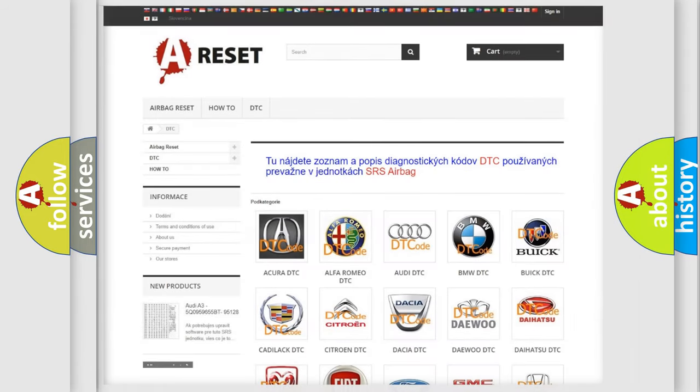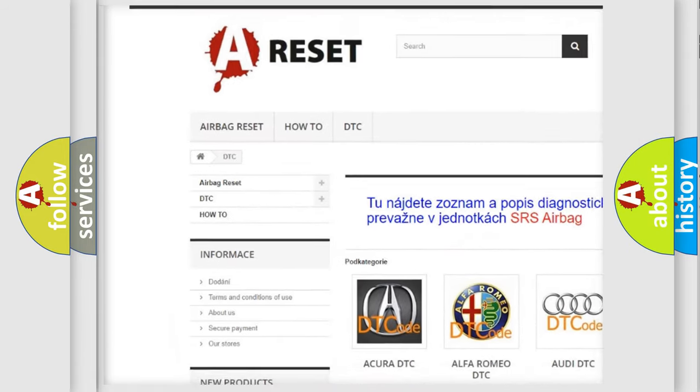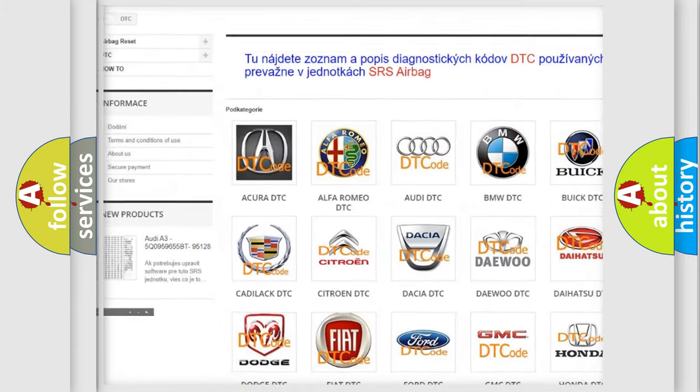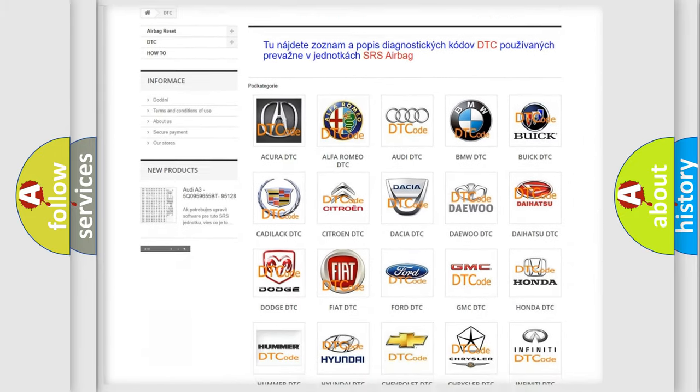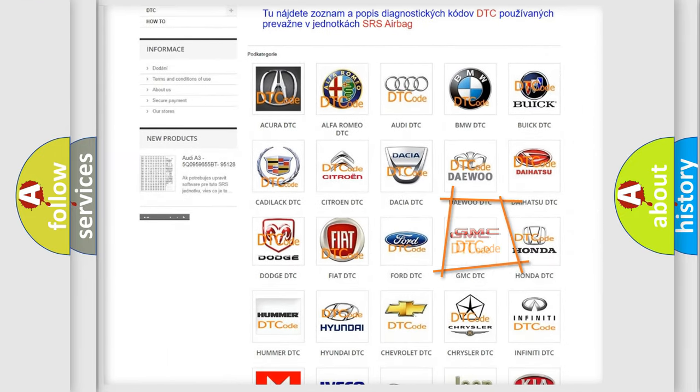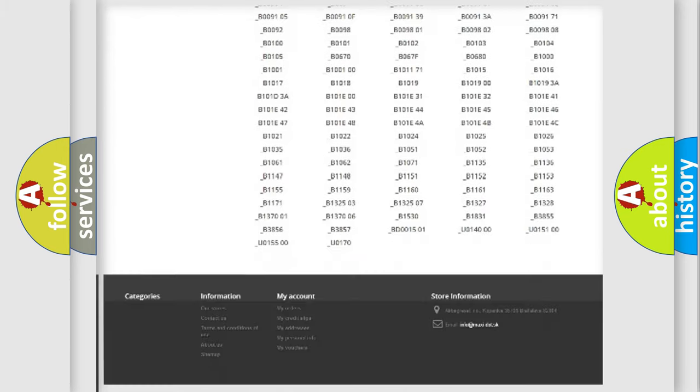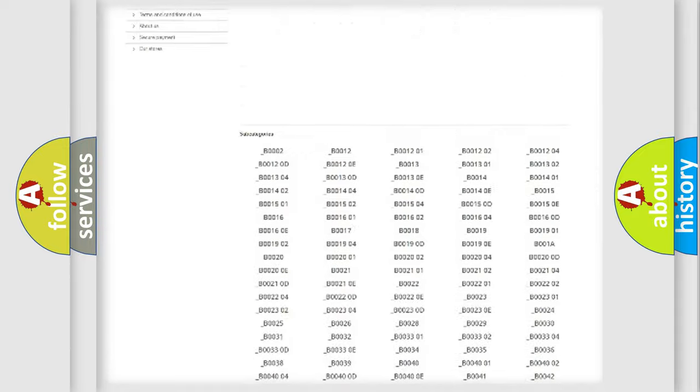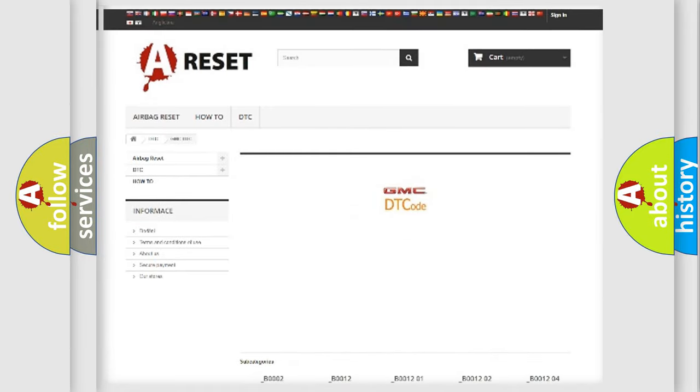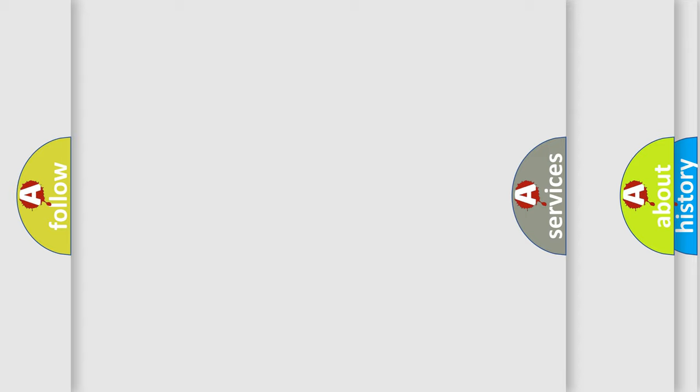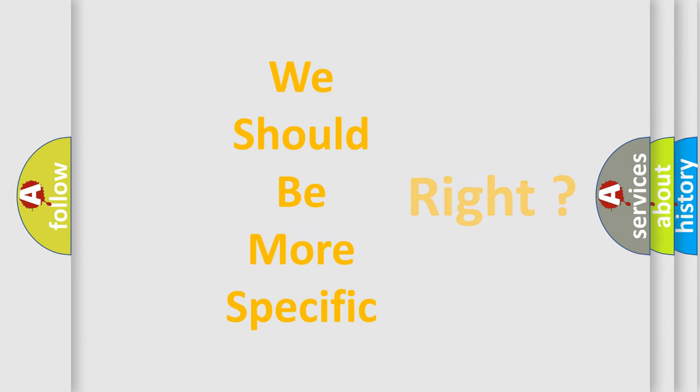Our website airbagreset.sk produces useful videos for you. You do not have to go through the OBD2 protocol anymore to know how to troubleshoot any car breakdown. You will find all the diagnostic codes that can be diagnosed in GMC vehicles, and also many other useful things. The following demonstration will help you look into the world of software for car control units.